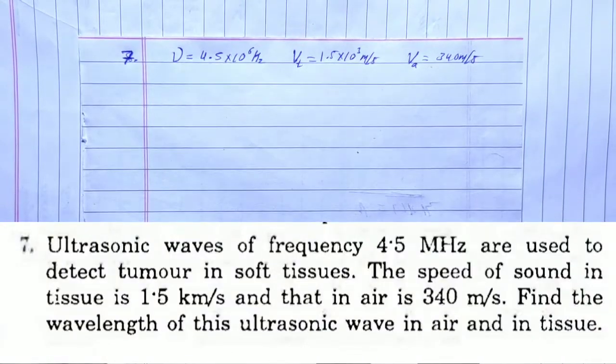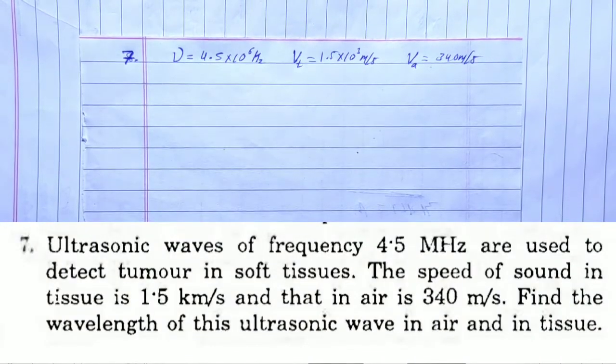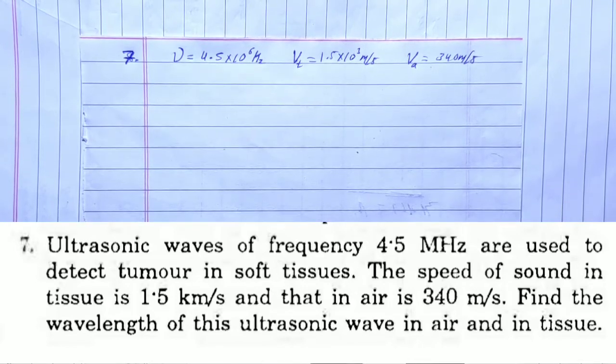HC Verma solution, Chapter 16 Sound Waves, Question 7: Ultrasonic waves of frequency 4.5 MHz are used to detect tumors in soft tissue. The speed of sound in tissue is 1.5 km/s and in air is 340 m/s. Find the wavelength of this ultrasonic wave in air and in tissue.